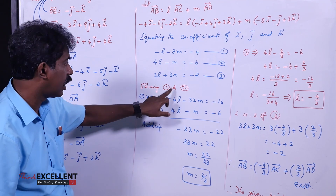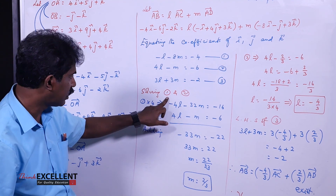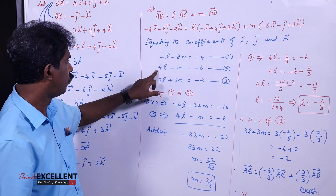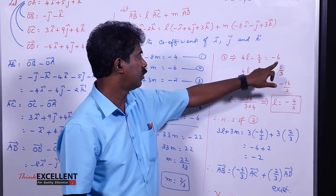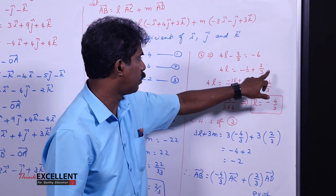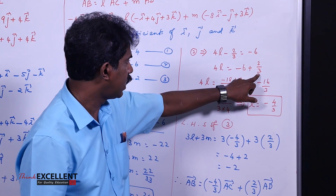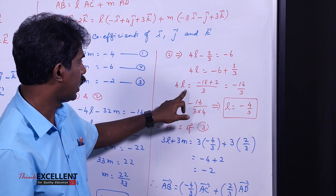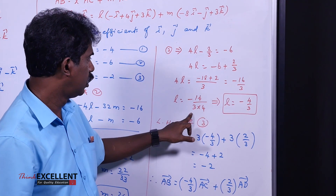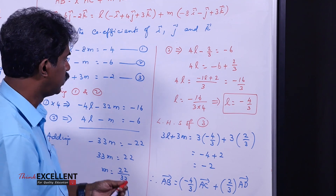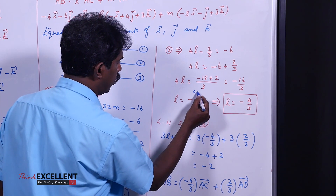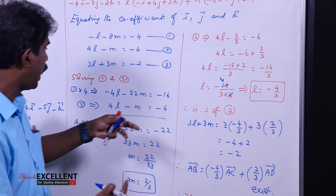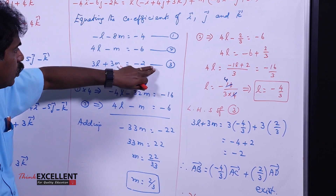We solved equations 1 and 2 and got L equals minus 4/3 and M equals 2/3. Now substitute these values into equation 3 (the third equation). Take the LHS: 3L plus 3M equals 3 times (minus 4/3) plus 3 times (2/3). The 3s cancel in each term, giving minus 4 plus 2, which equals minus 2. The RHS of equation 3 is also minus 2, so it satisfies.